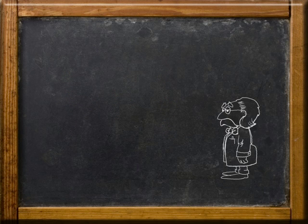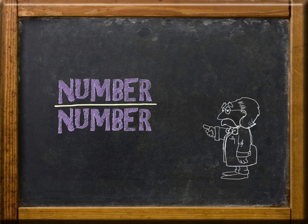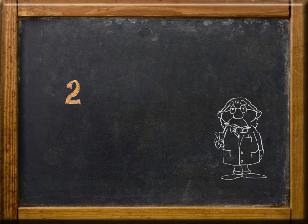Remember, any number other than zero when divided by itself is equal to one. For example, two over two is equal to one. Sound familiar?